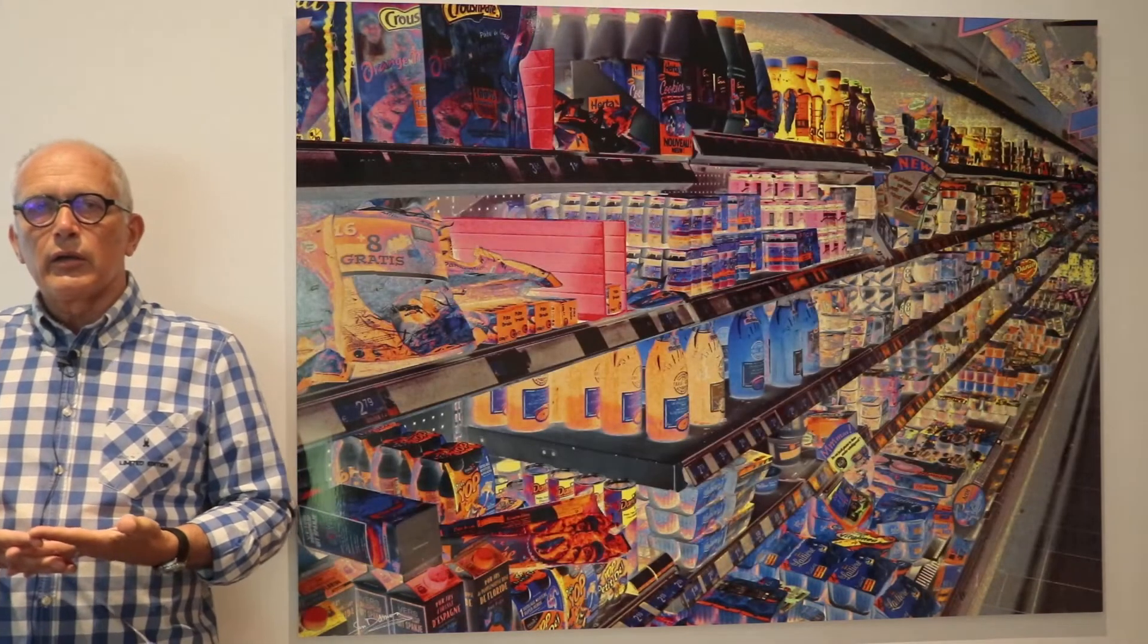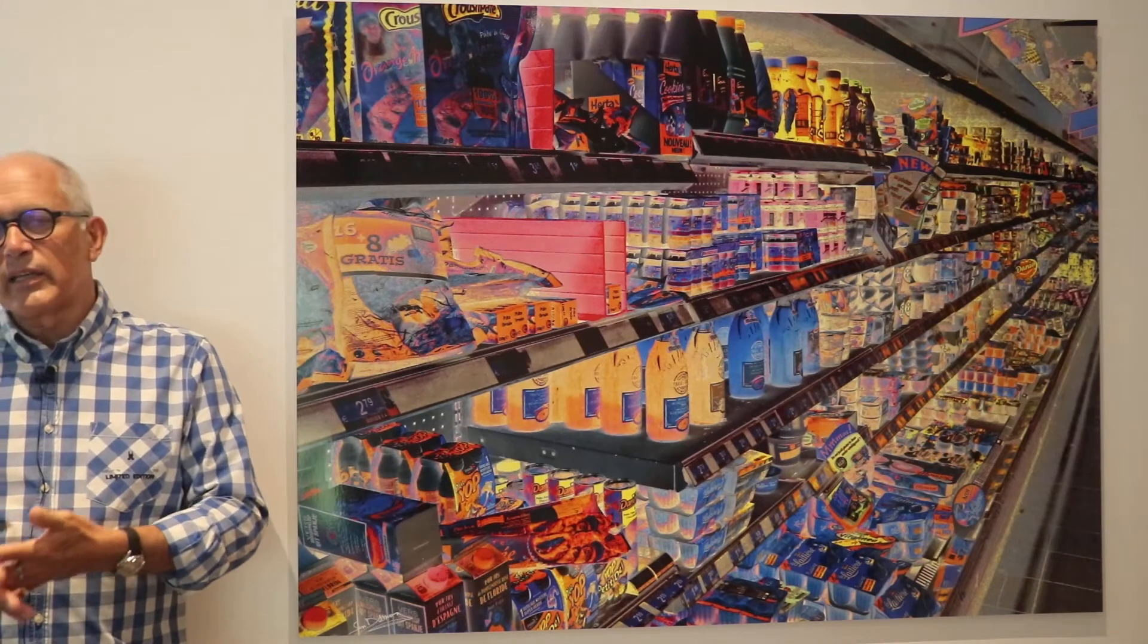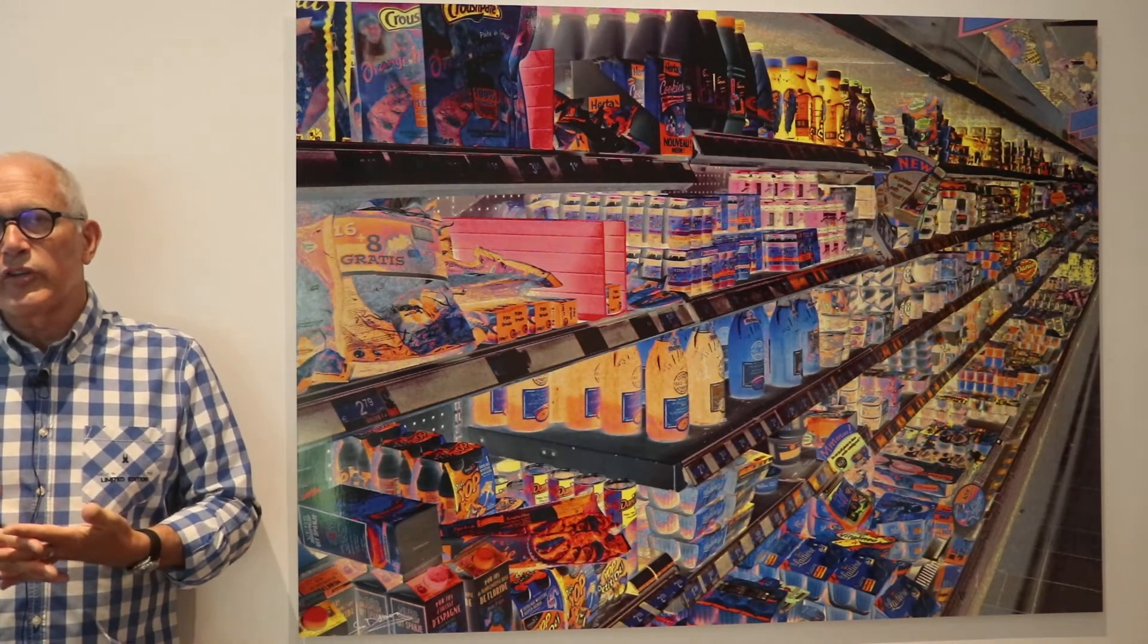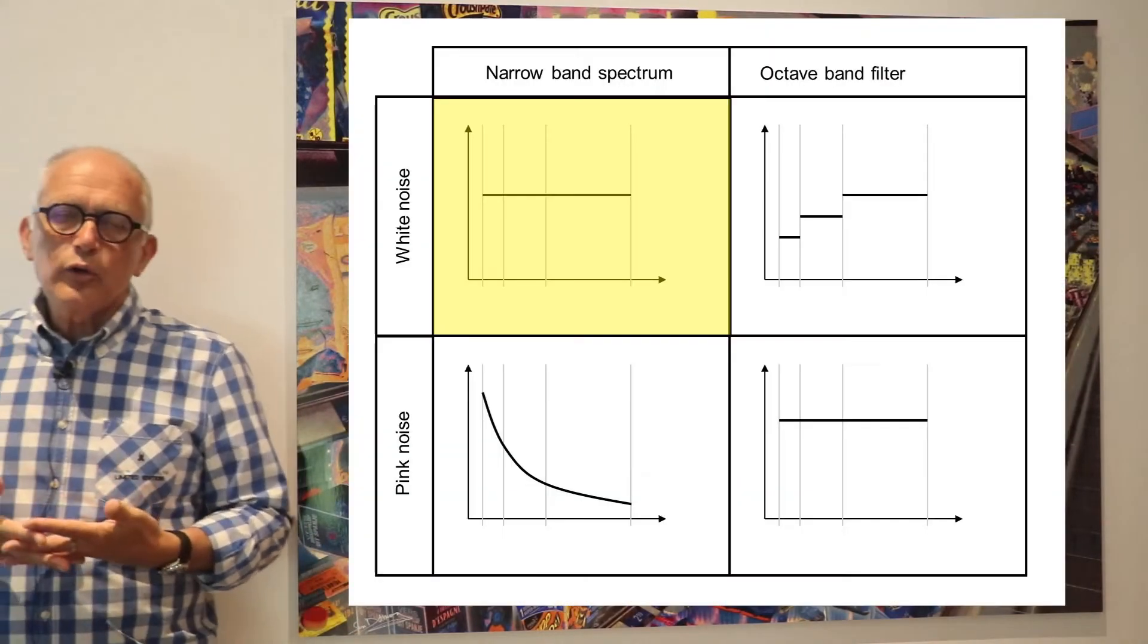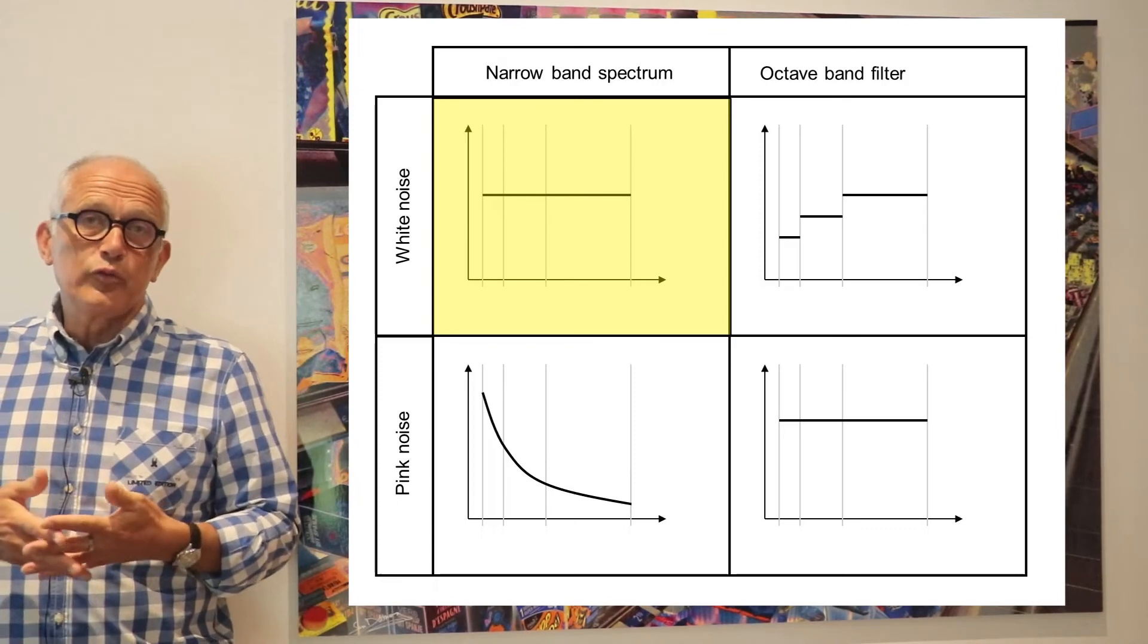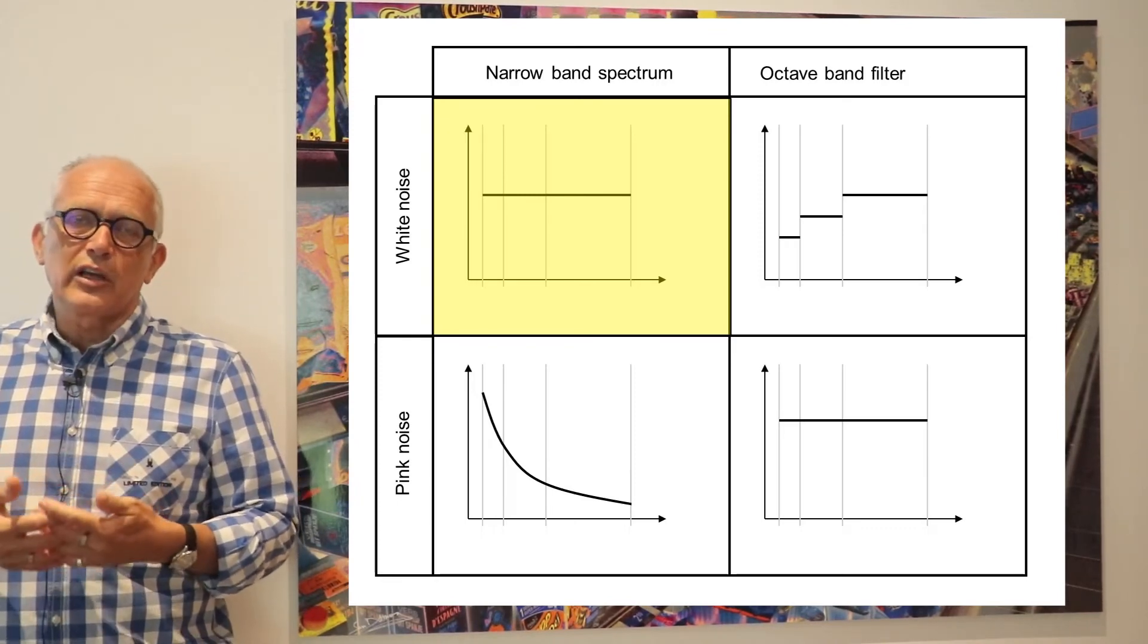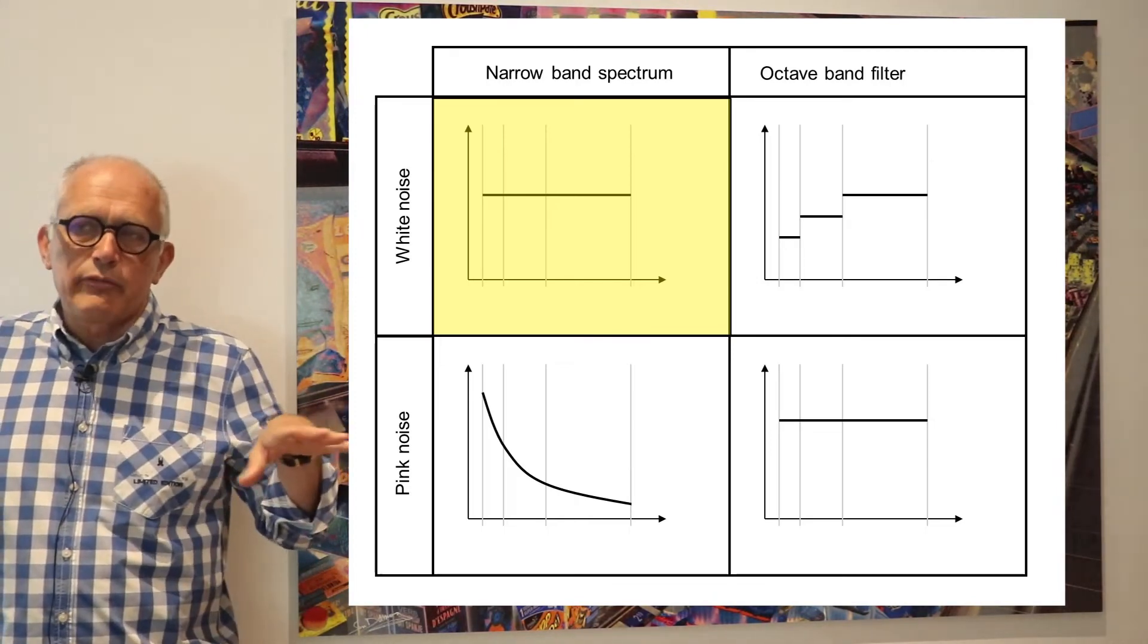Having defined octave, third octaves and twelfth octave bands, I can define now two final topics, the concept of white noise and the concept of pink noise. White noise is a type of noise that is often used in measurements and that characterizes an ideal sound that contains all frequency with exactly the same level.